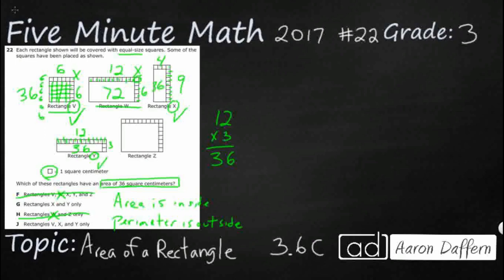Let's see what we have here on rectangle Z. 1, 2, 3, 4, 5, 6, 7, 8, 9, 10. Well 10 times nothing makes 36, but let's just double check. 1, 2, 3, 4, 5, 6, 7, 8. Yeah, 10 times 8 makes 80. That is much too large, so rectangle Z is out.